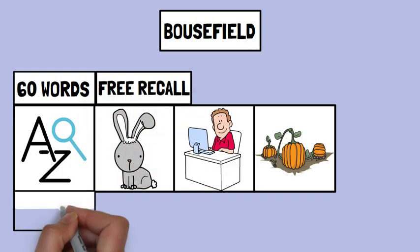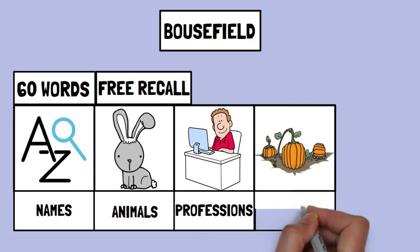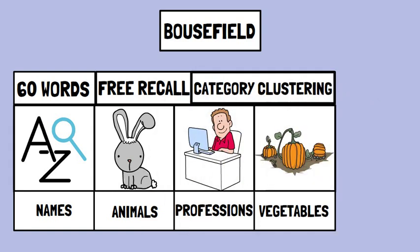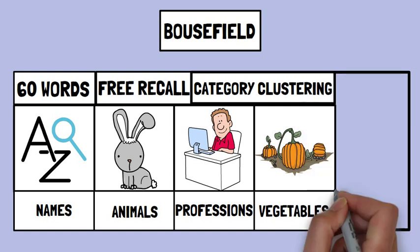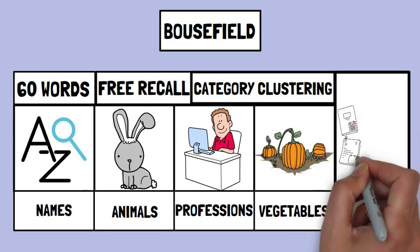The participants were required to make free recall of the words. However, they recalled the words of each category together. He called it category clustering. It is worth noting that though the words were presented randomly, the participants organized them category-wise in recall. Here category clustering occurred because of the nature of the list.